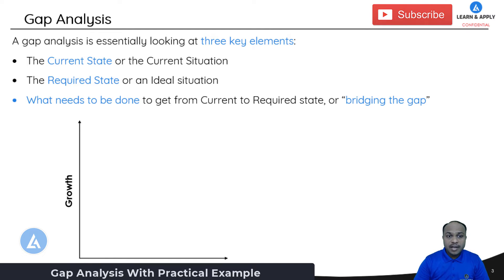The first element is the current state. The current state or it is also called as current situations. So you need to ask the question, what is the current state for your organization? Or if you are looking for the product or process performance, then what is the current state for your product or process performance?